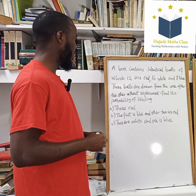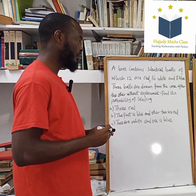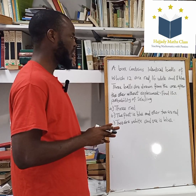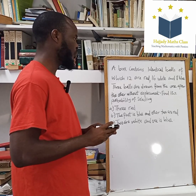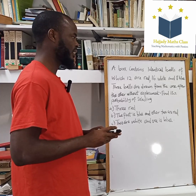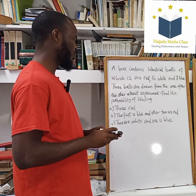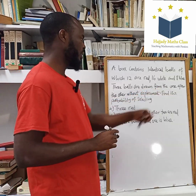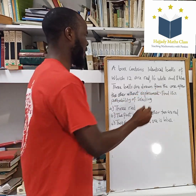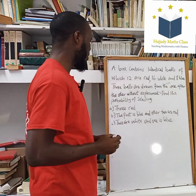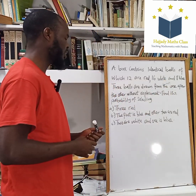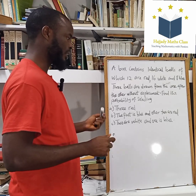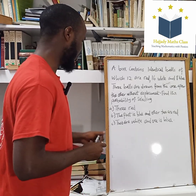So today, we have this question on sampling without replacement. The question says that a bag contains 12 red, 16 white, and 8 blue balls. When 3 balls are drawn from the bag, one after the other without replacement, find the probability of: selecting 3 red; the first is blue and the other 2 are red; and the last question.